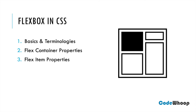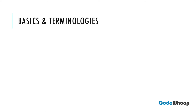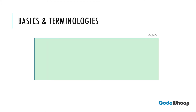Let's look at some basic concepts of Flexbox. The concept of Flexbox revolves around FlexContainer and FlexItems. Let's say we have a div element in our HTML code which we want to be termed as the FlexContainer. Within this container we can have multiple FlexItems, which are nothing but HTML elements that are a direct child of this element.